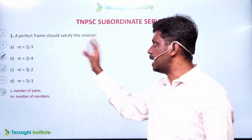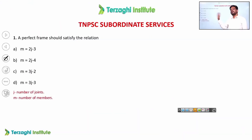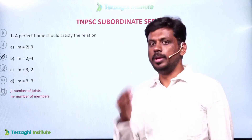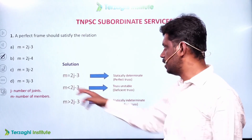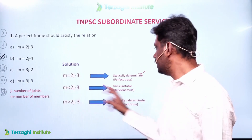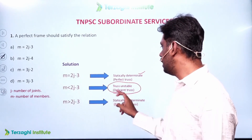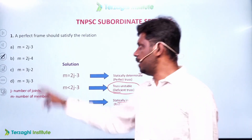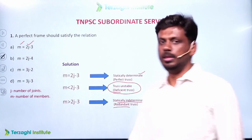For a perfect frame, the relation is M = 2J - 3, where M is the number of members and J is the number of joints. If M = 2J - 3, the truss is statically determinate. If M is less than 2J - 3, it is unstable or deficient. If M is greater than 2J - 3, it is redundant or statically indeterminate.